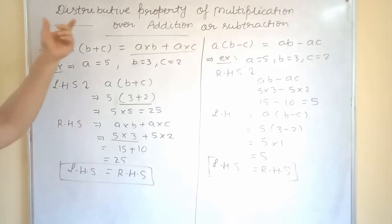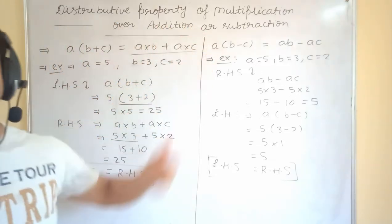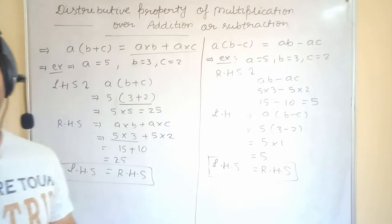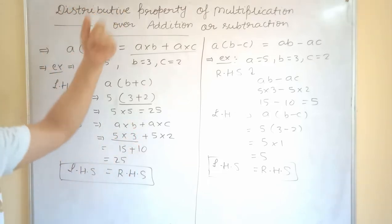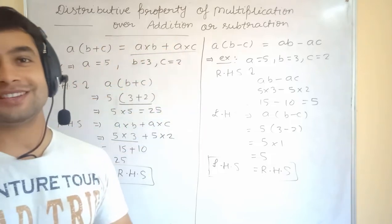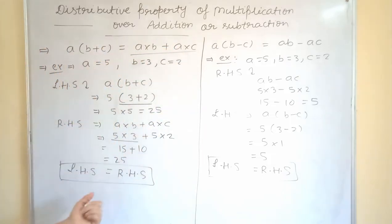I am going to discuss over here one property of the integers. That is, distributive property of multiplication over addition and subtraction. We are going to read it again. Distributive property of multiplication over addition and subtraction.